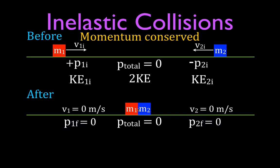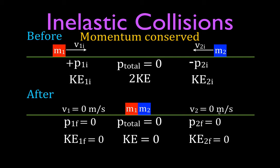But what about kinetic energy? Before, they were moving and had some kinetic energy. After, they're not moving, so the kinetic energy of object one is zero and kinetic energy of object two is zero. Zero plus zero is zero — the system now has no kinetic energy. We went from some kinetic energy to no kinetic energy, so kinetic energy was not conserved. This shows in a non-mathematical way that momentum is conserved but kinetic energy is not.